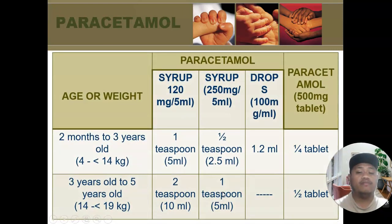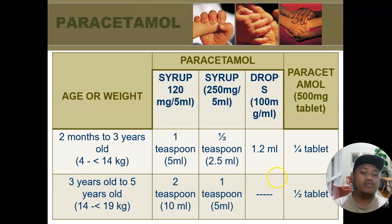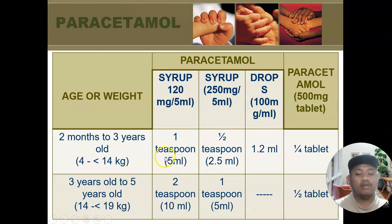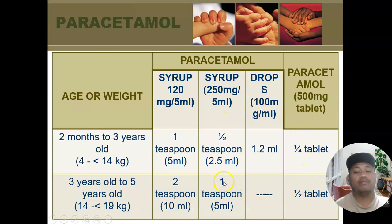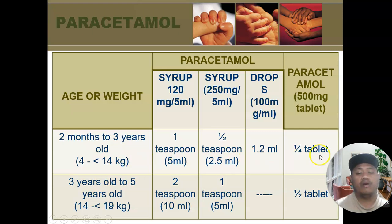For the use of paracetamol for pain and fever, here is the dosing table — you can screenshot or pause the video to copy it. Age and weight groups are 2 months to 3 years old (4–14 kg) and 3–5 years old (14–19 kg). For syrup, available doses are 120 mg per 5 ml, 250 mg per 5 ml, and 100 mg per ml. If no syrup is available, use paracetamol 500 mg tablets: give a quarter tablet for 2 months to 3 years old, and half a tablet for 3 to 5 years old. Use available home-based measurements.